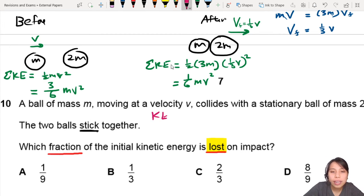The kinetic energy loss will be 3 over 6 MV squared minus 1 over 6 MV squared. That will give me 2 over 6, which is equivalent to 1 over 3 MV squared.